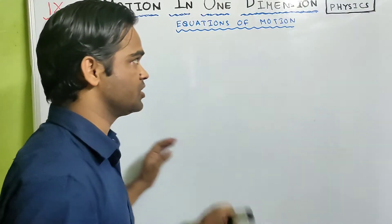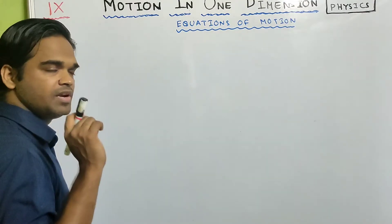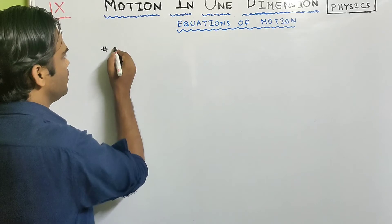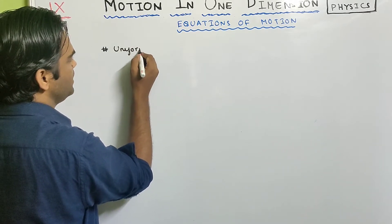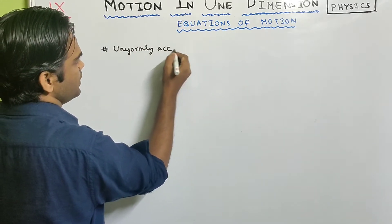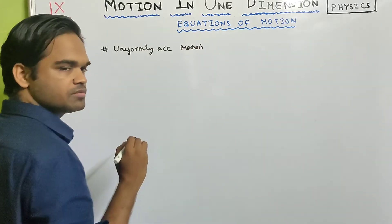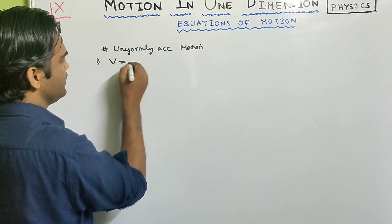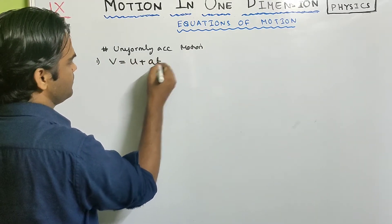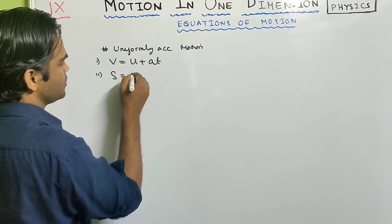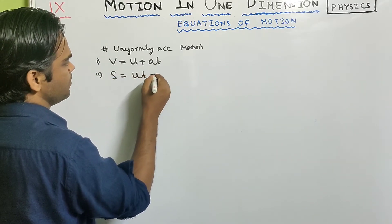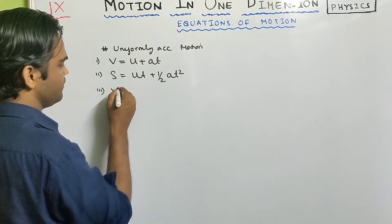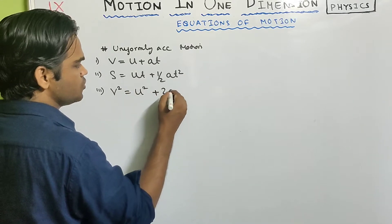In this video we will continue with motion in one dimension, class 9 physics. We will look at equations of motion and derive the equations of uniformly accelerated motion. We have 3 equations: first, v equals u plus at; second, s equals ut plus half at squared; and third, v squared equals u squared plus 2as.